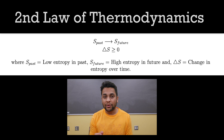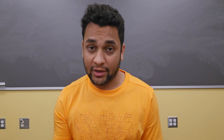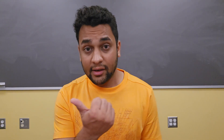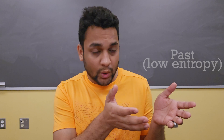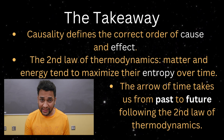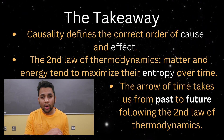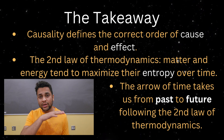The principles of the arrow of time and causality find their support in the second law of thermodynamics, which loosely states that matter and energy tend to maximize their entropy over time. This increase in entropy aligns with the arrow of time, creating a clear direction from a past of low entropy to a future with high entropy. The bounds of causality and the arrow of time shape our understanding of the universe's evolution from a past to a future.